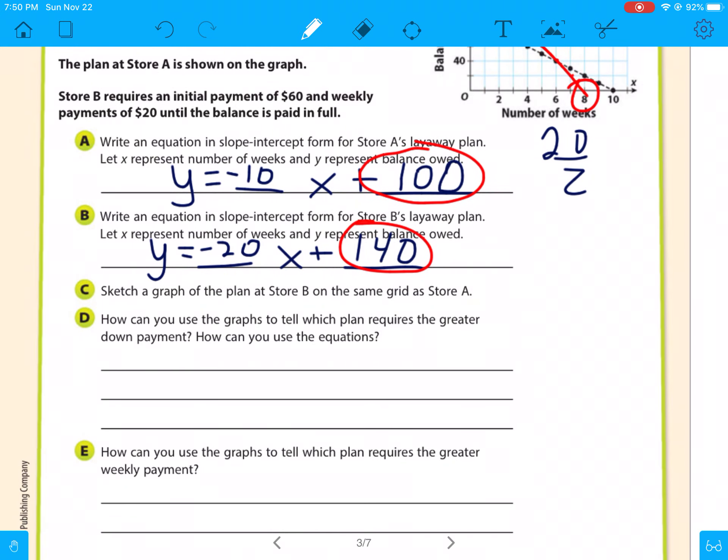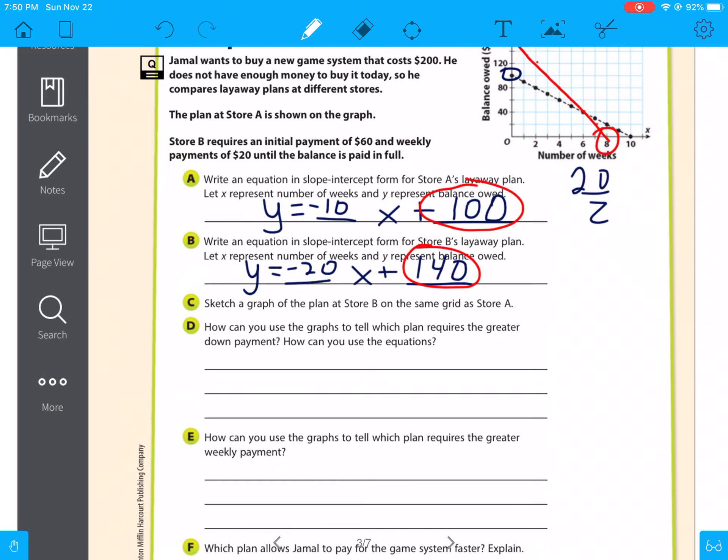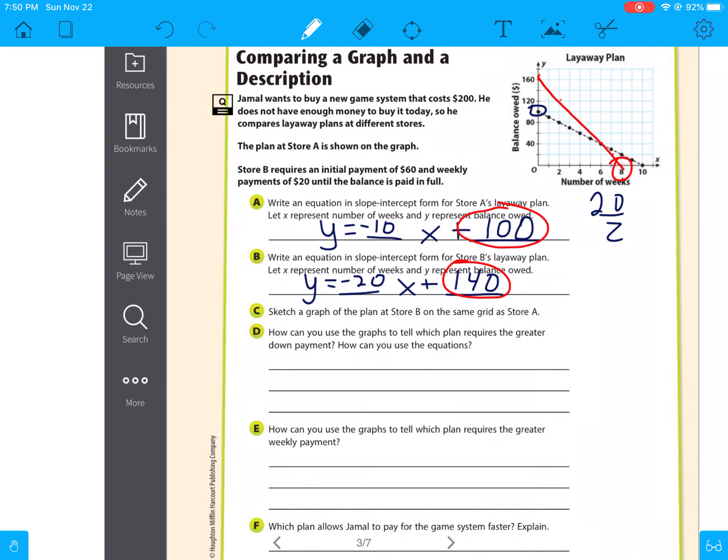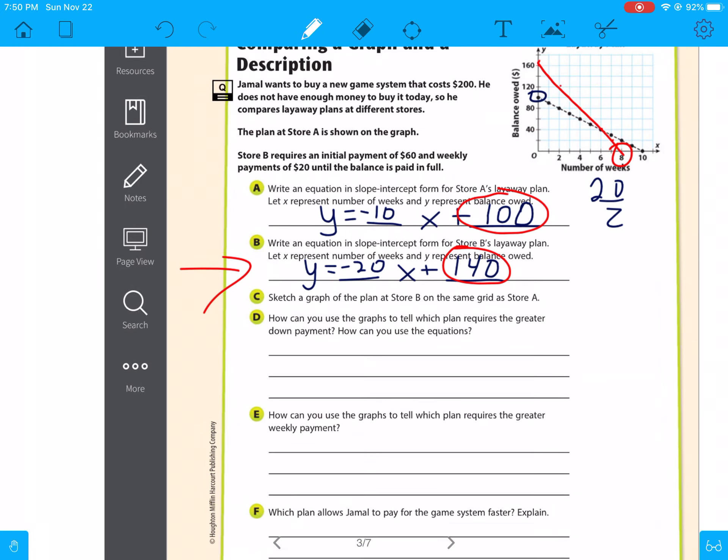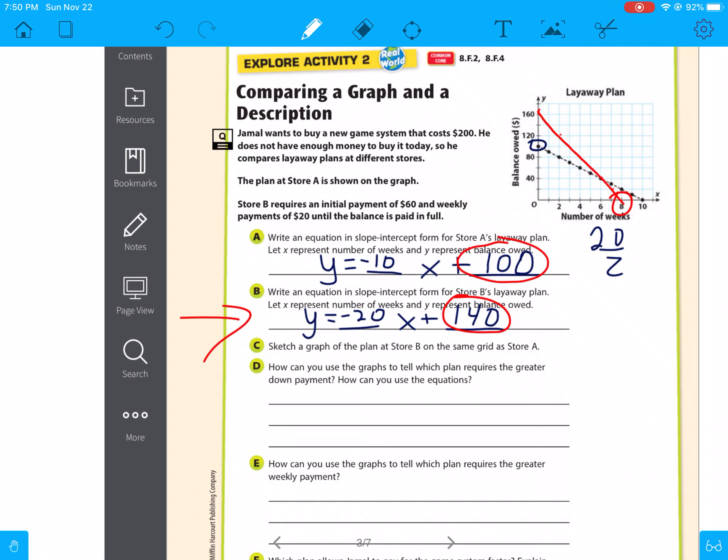So how can you use the graphs to tell which plan requires the greater weekly payment? That's the steepness of the slope. So if you look, the red one is going down $20 over $1. The other one is only going down $10 over $1. So with the red one or plan B, you're going to be paying twice as much each week or each month. Oh, it's each week. So with store A, you'll have it paid off in 10 weeks. With store B, you've got it paid off in 8 weeks.